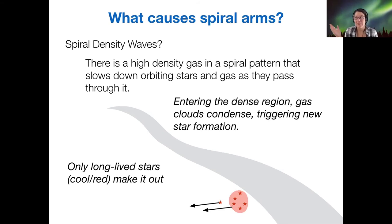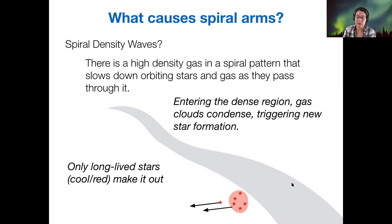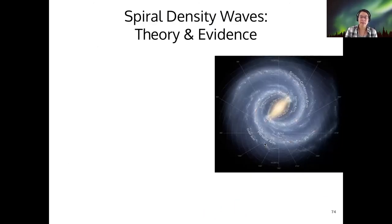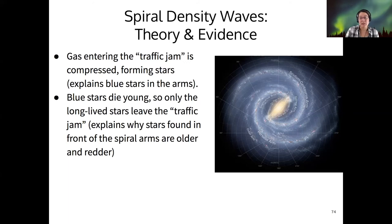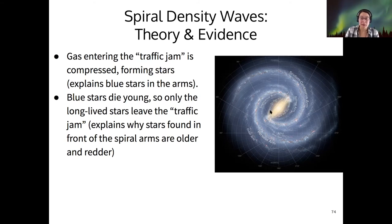In the traffic jam analogy, all the cars make it out — but in the density wave theory, the blue stars die out before they make it out. How does that compare to evidence? We do see lots of blue stars in the arms and fewer blue stars between the arms, so that seems reasonable. And if you look closely at many spiral galaxies, the stars in front of the spiral arms appear older and redder. The spiral density wave theory connects with that evidence pretty well — this theory does explain why we see the blue and red regions in our spiral arms.